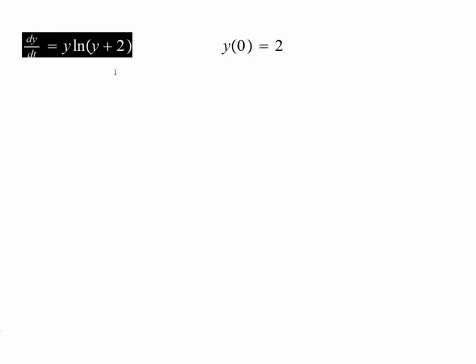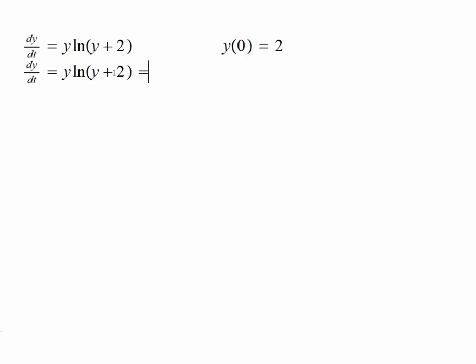First thing to note is what are the stable solutions or the equilibrium points of this differential equation. You can notice that this function becomes 0 when y is 0, or since natural log of 1 is 0, when I take y equals negative 1, then the derivative of y with respect to t will be 0 and that will also be an equilibrium solution. So let's first go ahead and sketch these two solutions since we know them already.